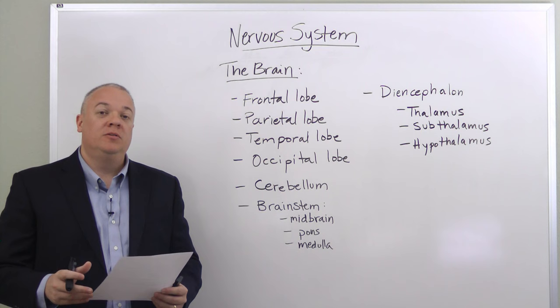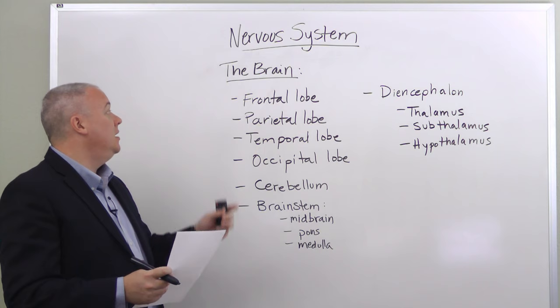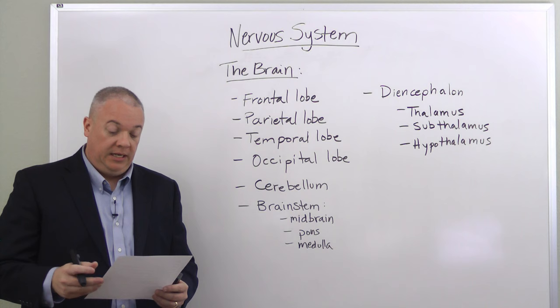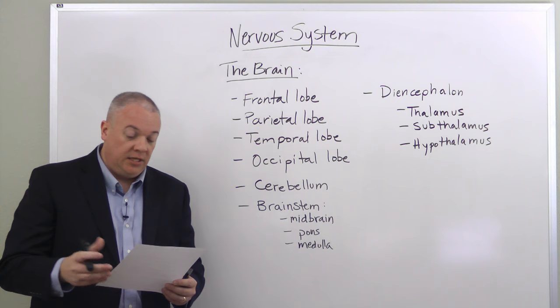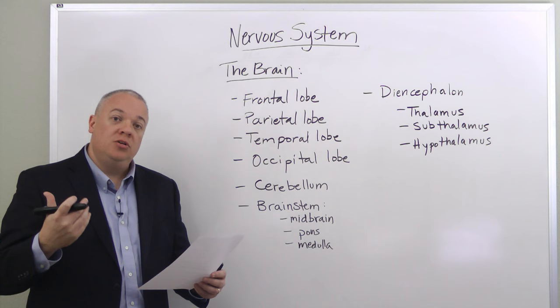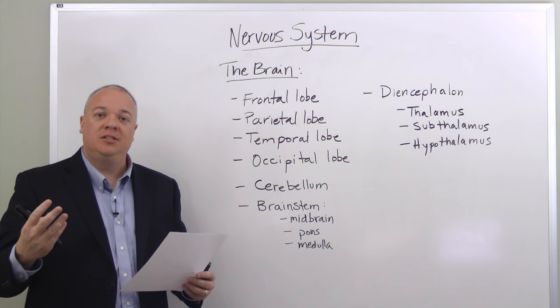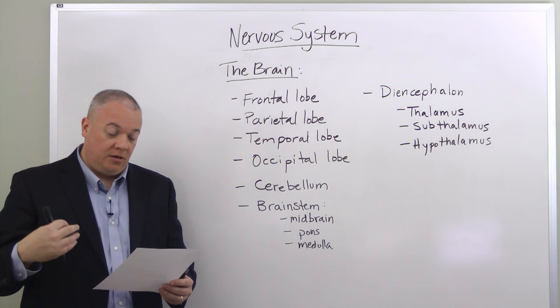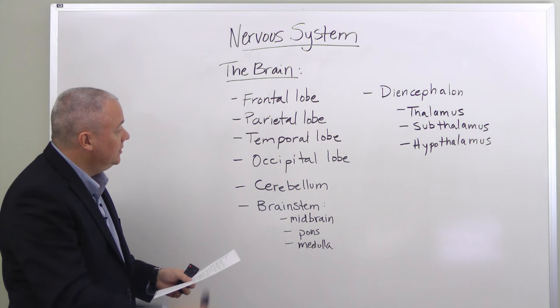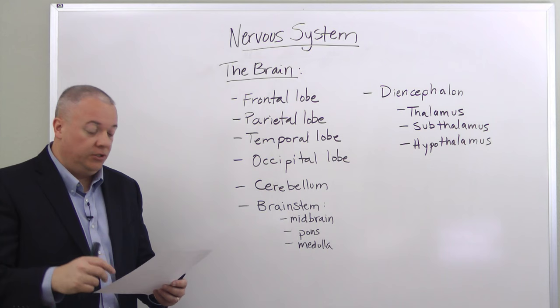The brain is one of the most important parts of our nervous system. The frontal lobe controls emotions, judgments, the motor aspects of speech, and is the primary motor cortex for voluntary muscle activation. The parietal lobe receives sensory information from touch, proprioception — our ability to tell where our arms and legs are — and our orientation in space, as well as temperature and pain.